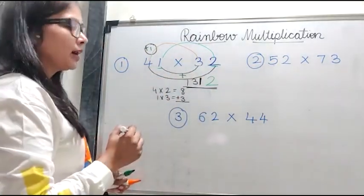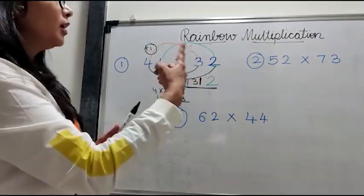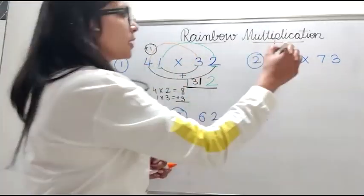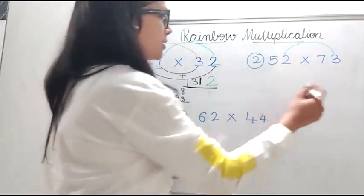1312 is my answer. Let's follow the same steps for the next sum. So the first step is I multiply my unit. Two threes, I get the answer as six.